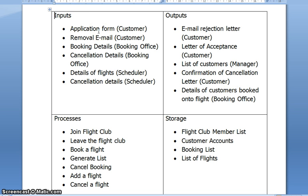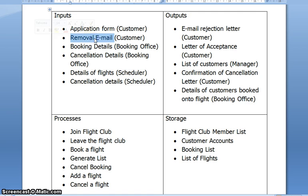Those are all our inputs and outputs. At this stage just check the words on here — we're not giving any action words. We're not giving words like 'remove', which is a doing word. We're saying it's a removal email; it's data, it's a data flow. We're not saying 'cancel'; it's cancellation details. So do make sure that your inputs and outputs have the right kind of words on them.